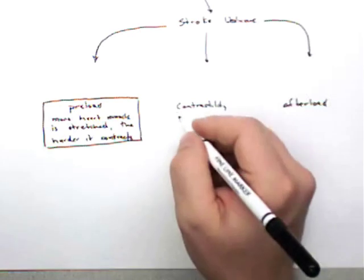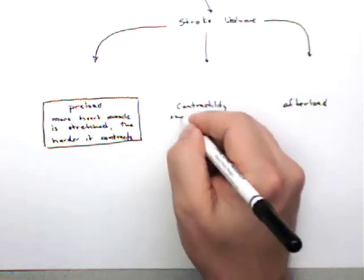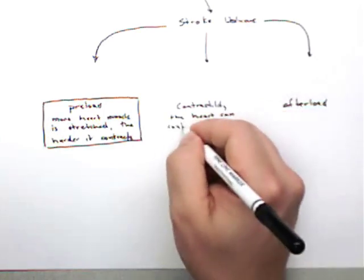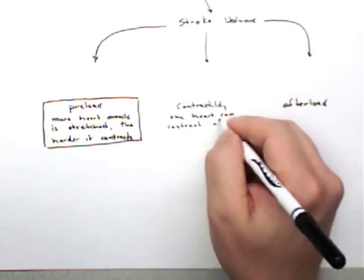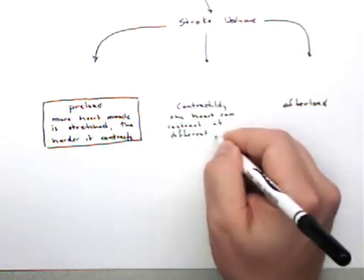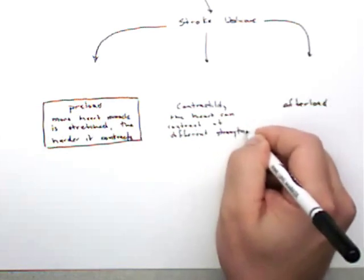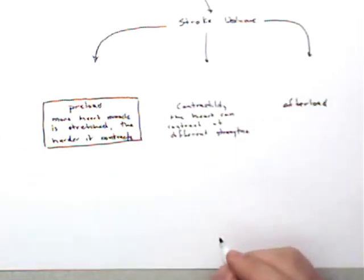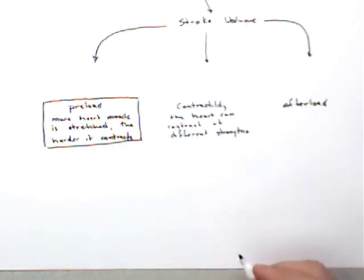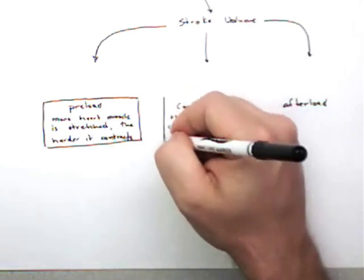Contractility means the heart can contract at different strengths. That's unique to heart muscle as well. You take a normal skeletal muscle fiber and you just look at an individual fiber, it's got two speeds—it's either contracting or it's not. Heart muscle, on the other hand, always reminds me of Spinal Tap because heart muscle can go to 11. Heart muscle can actually contract at several speeds, or strengths if you prefer.